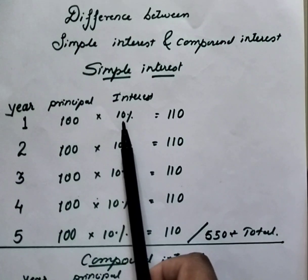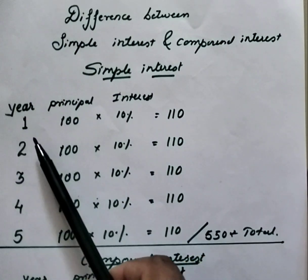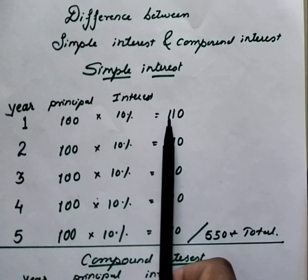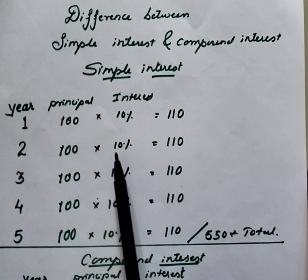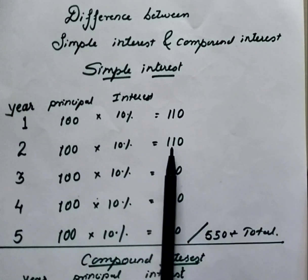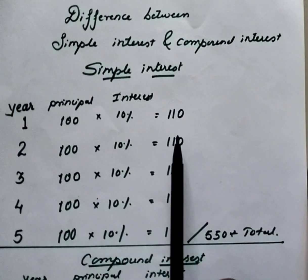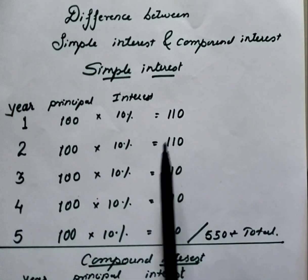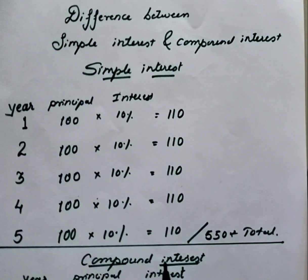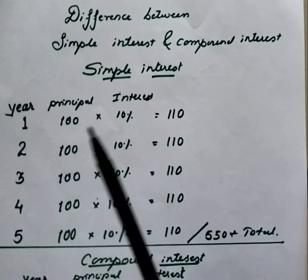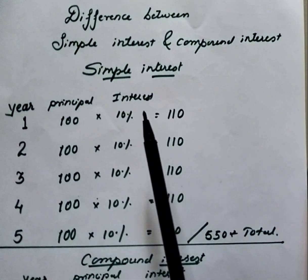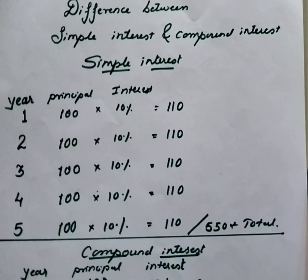For the first year, he or she will get 110 rupees. For the second year, the same 10 percent interest — 110 rupees only, 10 rupees extra per year. So in total, that person will get 550 rupees after five years. This is simple interest.